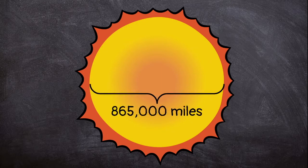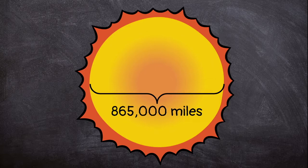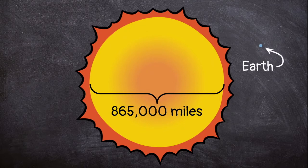The sun is 865,000 miles wide. That is 110 times bigger than Earth.